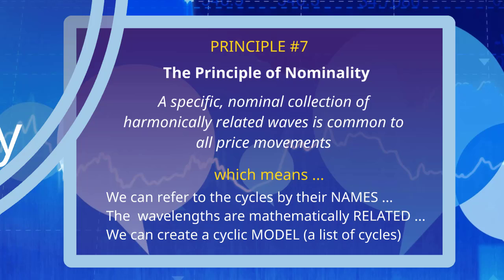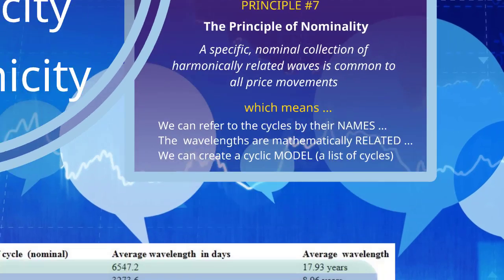This principle also tells us that the wavelengths of the cycles are mathematically related to one another. As a result of the principle of nominality, we can create what is called a cyclic model, which is very simply a list of cycles.